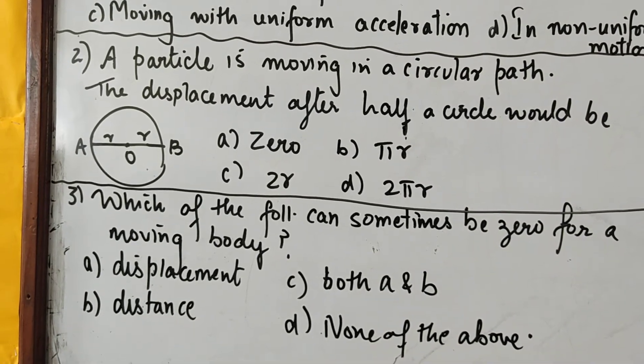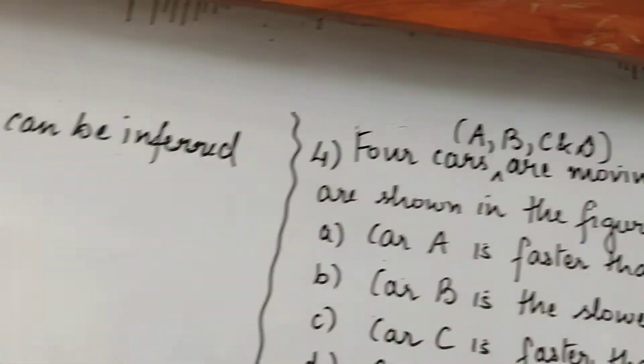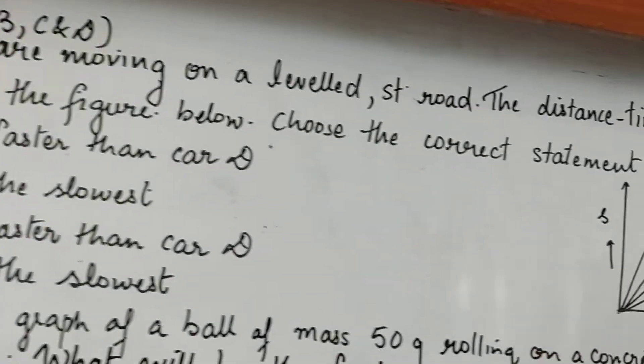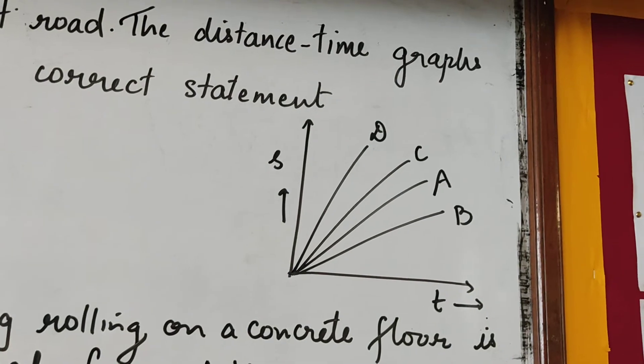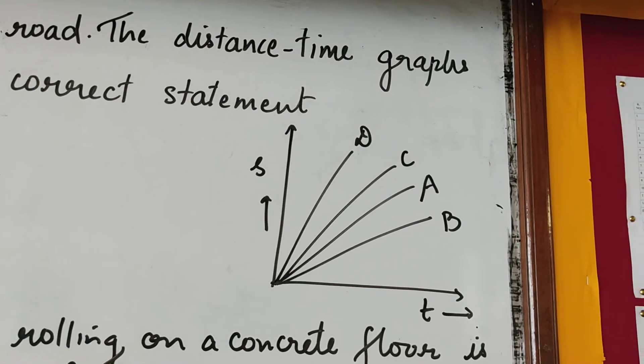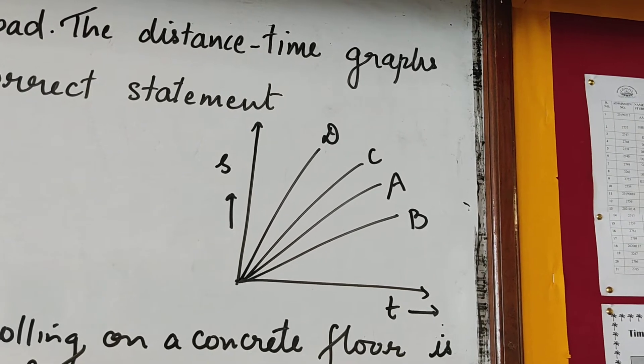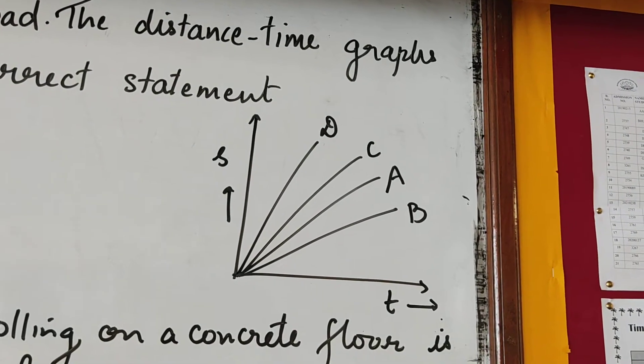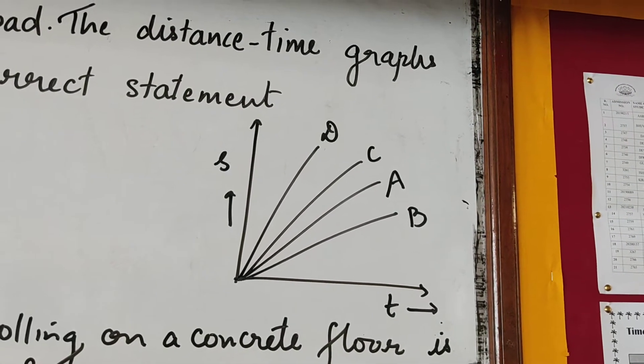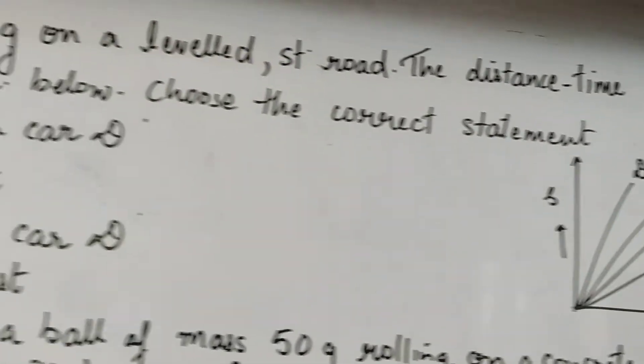Now let us see the fourth MCQ. It is based on this diagram. This is a graph, ST graph. We can have a look at the graph. This is ST graph and we can see there are four curves drawn for ST graph and A, B, C, D it is written.